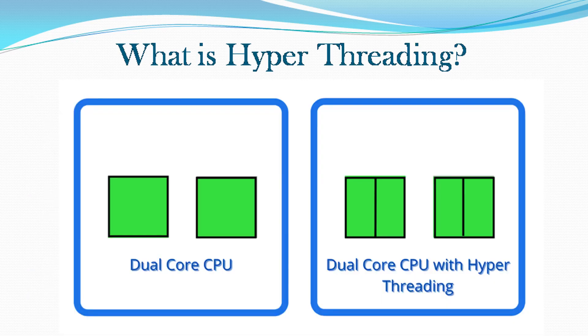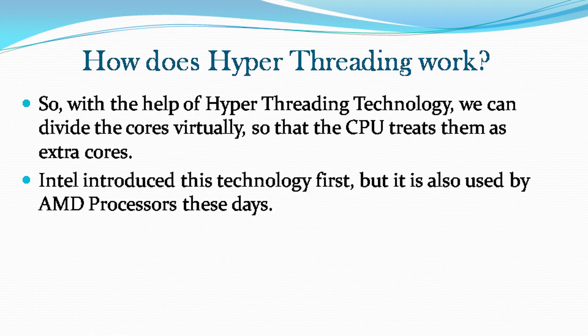This is how we can represent a dual-core CPU with no threads, and a dual-core CPU with two threads. With the help of hyper-threading technology, we can divide the cores virtually so that the CPU treats them as extra cores.